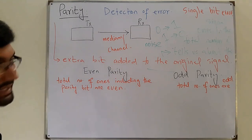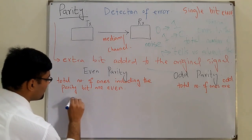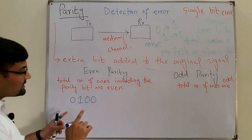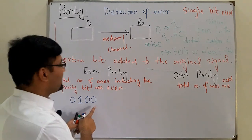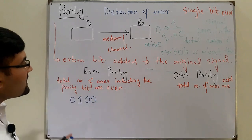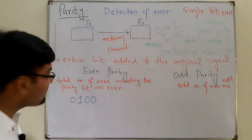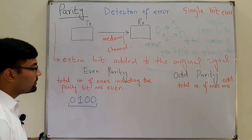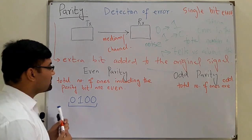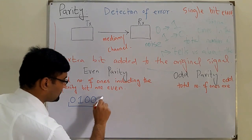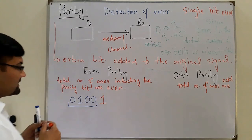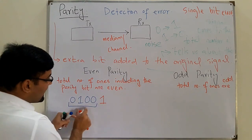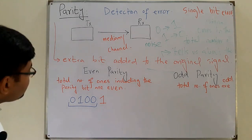Let's say we have a four-bit signal: 0100. This is the original signal. The parity bit is placed after the least significant bit. For even parity, the total number of ones must be even. In 0100 there is one '1', which is odd, so we place the parity bit high — making the total number of ones even.